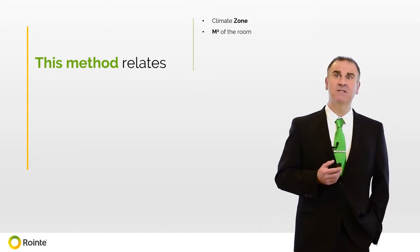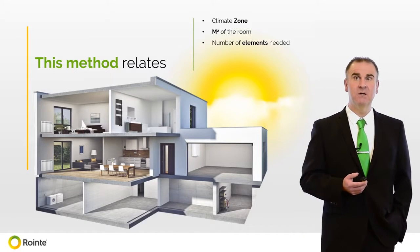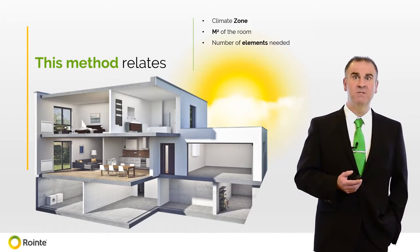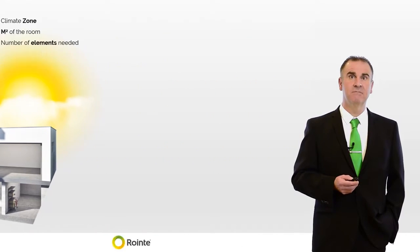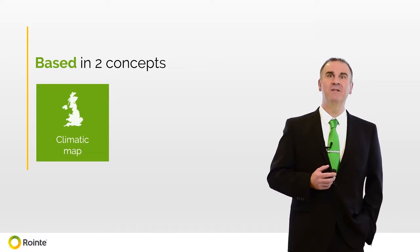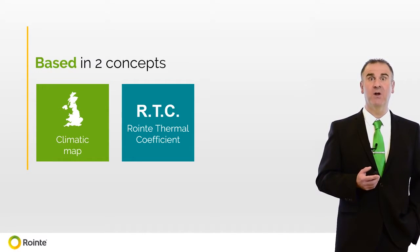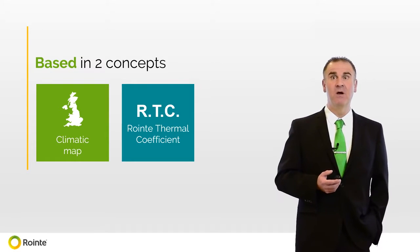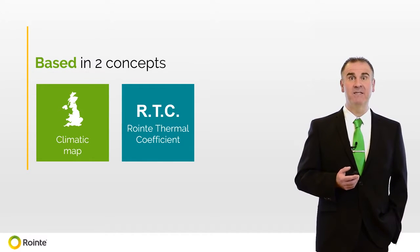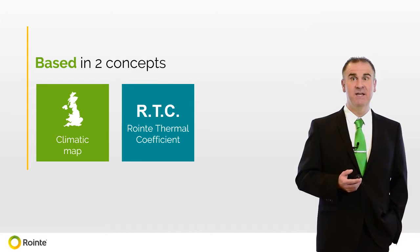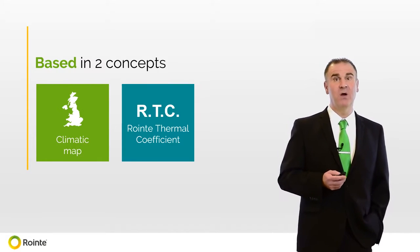The Rowente method to calculate heating for a property relates to climatic zone, room size, and number of elements. There are two elements we need to take into consideration before we are able to work out the correct size radiator for a room. Firstly, we need to work out the climatic zone the installation is situated in, and from this we can work out the Rowente thermal coefficient.